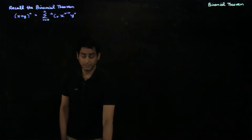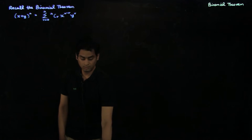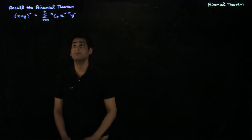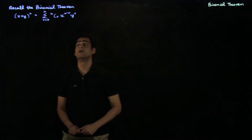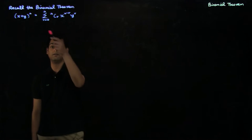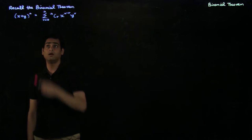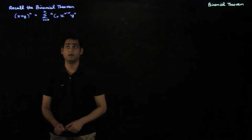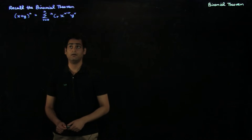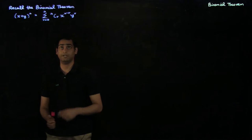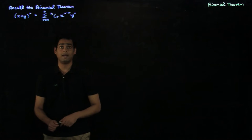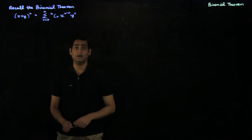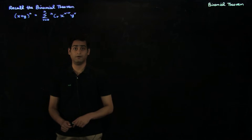As you may recall, the binomial theorem is given as follows. We have (x + y)^n, which can be written as the summation from r = 0 to n of nCr times x^(n−r) times y^r.